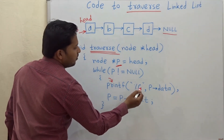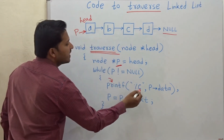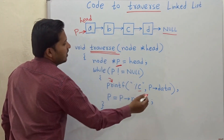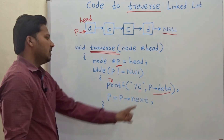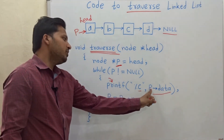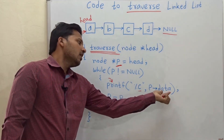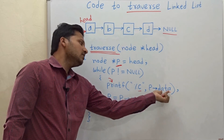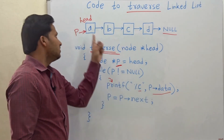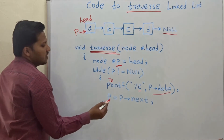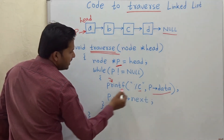Inside the loop, we use printf with %c, meaning the data inside the node is of character type. We print that data using p->data, where 'data' is the element in the structure of this node.